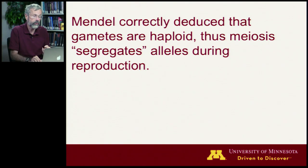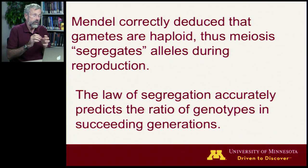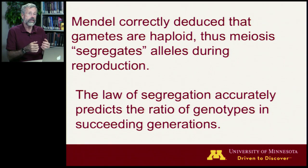Just by performing these simple experiments, Mendel correctly was able to deduce that gametes are haploid. Thus, what we now call meiosis segregates these alleles during reproduction. Mendel's law of segregation accurately predicts the ratio of genotypes in succeeding generations.